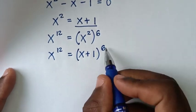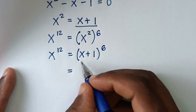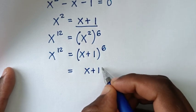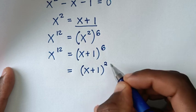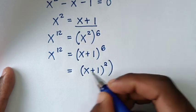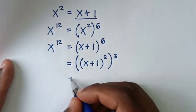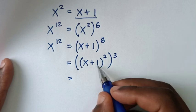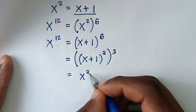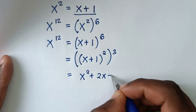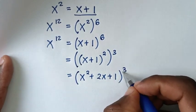To simplify (x plus 1) to the power of 6, we rewrite it as (x plus 1) squared, inside the bracket, then to the power of 3. So we expand (x plus 1) squared, which equals x squared plus 2x plus 1, then bracket to the power of 3.